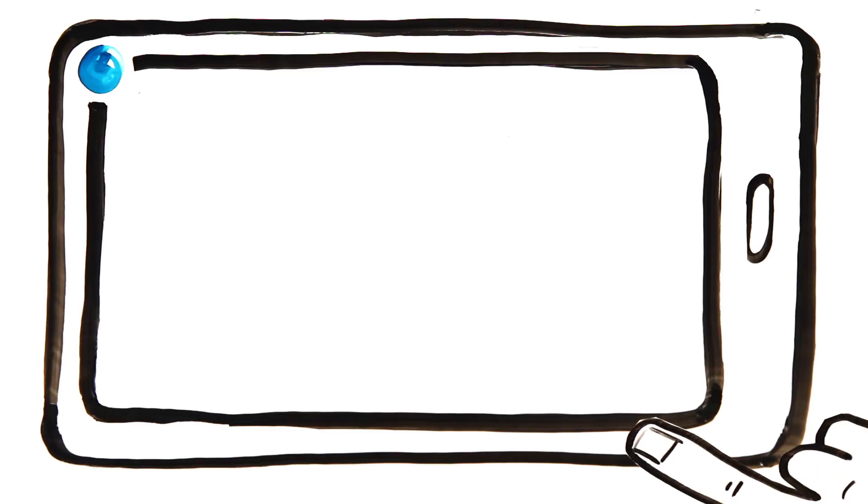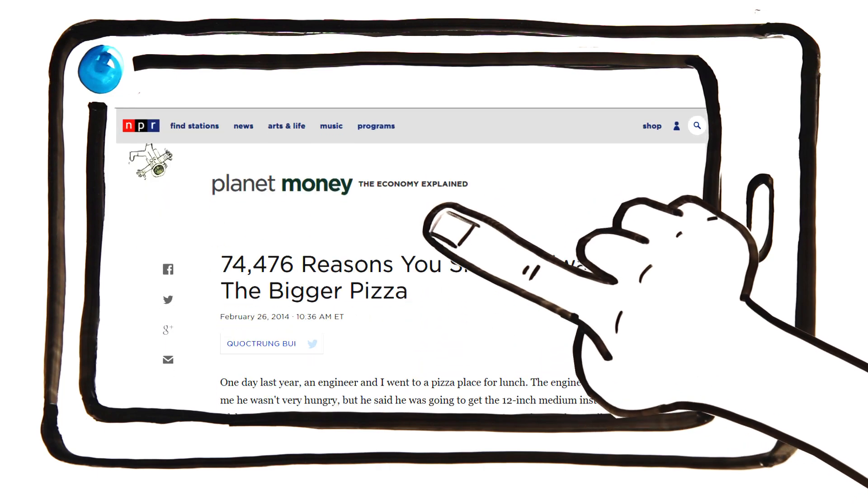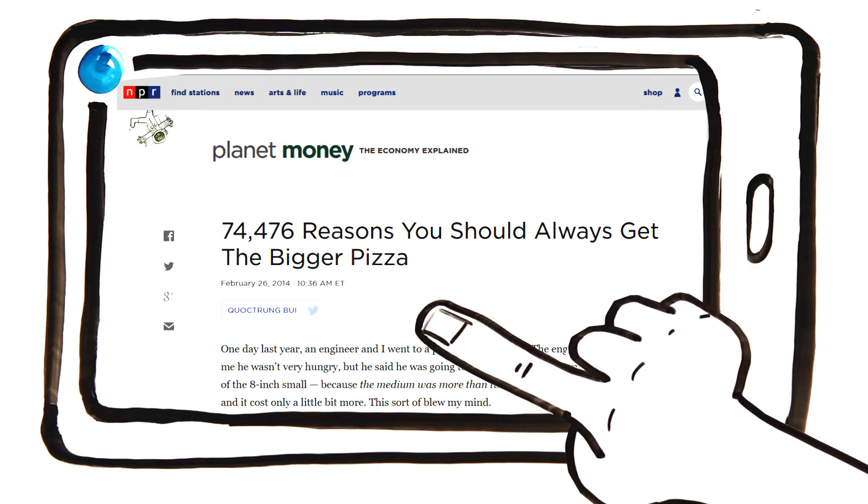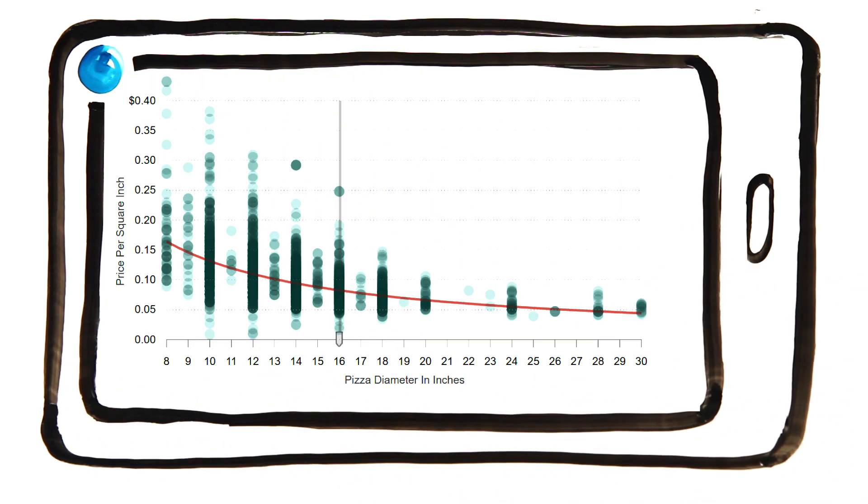In fact, NPR did a study of over 74,000 pizza prices in America, and created an interactive graph to show exactly how the price of pizza changes with size, and how much more pizza you get when you order a large.